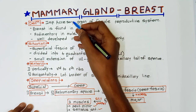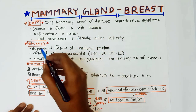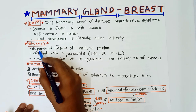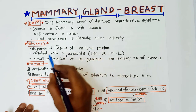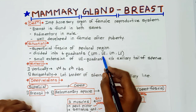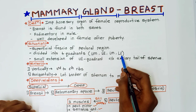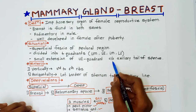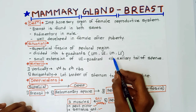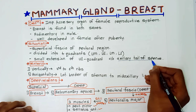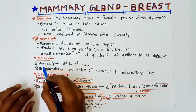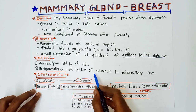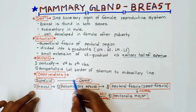Next is situation of the breast — where the breast is located. It is situated in the superficial fascia of the pectoral region. It is divided into four quadrants: upper medial, upper lateral, lower medial, and lower lateral. The small extension of the upper lateral quadrant is called the axillary tail of Spence — this is an important point. The extent of the breast vertically is from the second to sixth rib, and horizontally from the lateral border of sternum to the mid-axillary line.